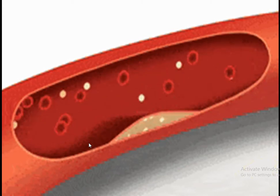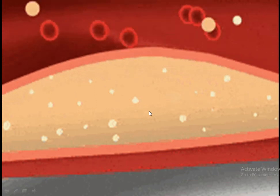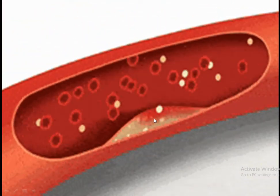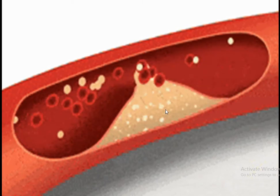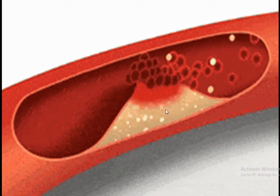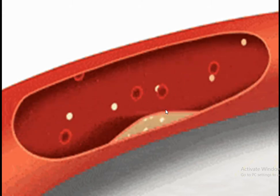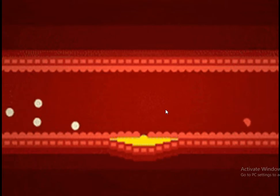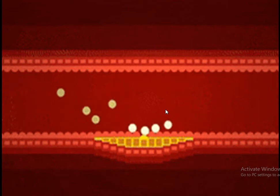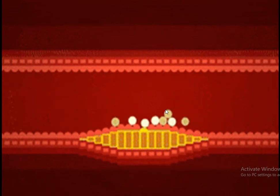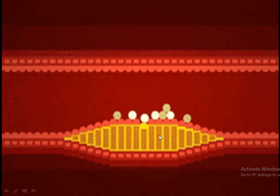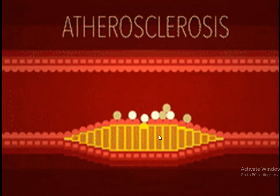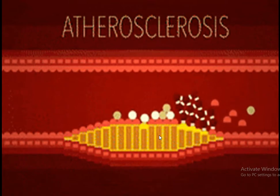An abnormal clot increases in its width because of the accumulation of more and more cholesterol particles, making a condition called atherosclerosis and occluding the blood vessel completely. This is a special condition in which the blood vessels become hardened. You can see more and more accumulation of cholesterol here, making the vessel wall more and more hard, making the blood flow very difficult, and an embolus can occur. Small pieces can detach from this side also.